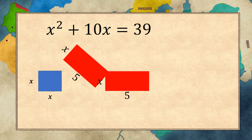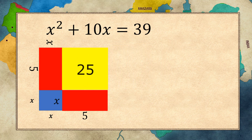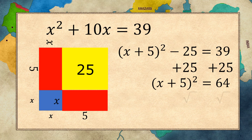Now I am going to attach the two rectangles to the square, making an L shape. To make this L shape into a square, we will have to add a smaller square. The smaller square will be 5 by 5, so 25. Writing this out gives x plus 5 all squared minus 25 equals 64. With some simple algebraic manipulation, you get the answer x equals 3.